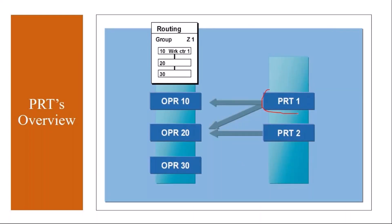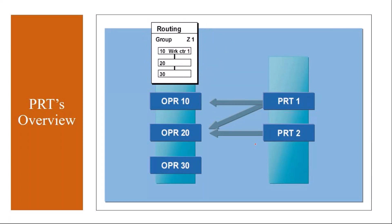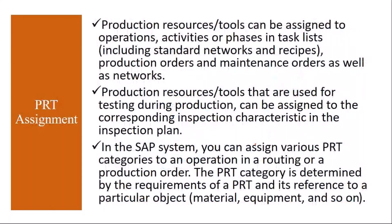First you create a PRT, and then you assign this PRT to an operation in the routing. In the routing you have operations, and for those operations you assign the production resource tools. PRTs can be assigned to operations, activities, or phases in a task list. You can also assign these PRTs directly in production orders or even in the plant maintenance module — they can be assigned to maintenance orders as well.